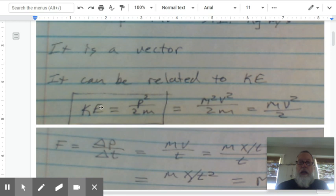Momentum can be related to kinetic energy. If we look at this equation right here, kinetic energy equals momentum squared divided by 2 times mass. That's the equation relating kinetic energy to momentum.